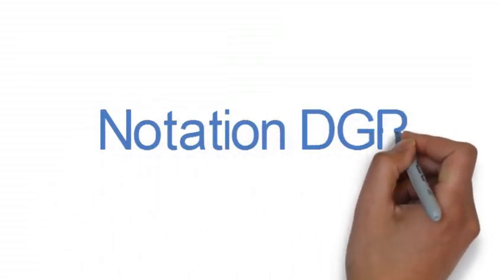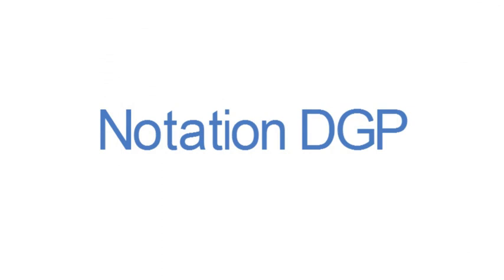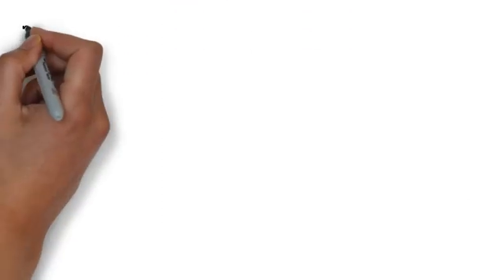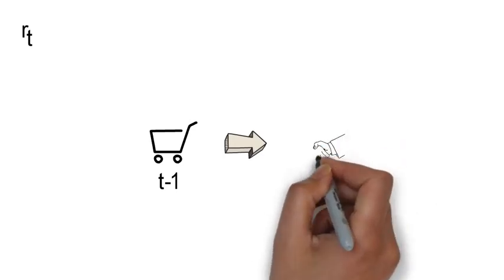Now, in this video, I introduce how we think about returns in this course. First, the return RT is a one-period return. It's the return you earn when buying an asset, let's say S at time t-1 and selling it at time t.